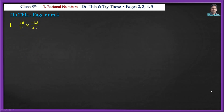Do this: 18/11 × (-33/45). Let us solve this problem. We cancel numerator and denominator using common factors. 18 and 45 share a factor of 3: 18 = 3×6, 45 = 3×15. Then 11 and 33 cancel: 33 = 11×3. Cancel 3 from 15: 15 = 3×5.